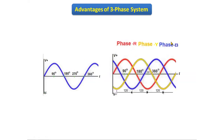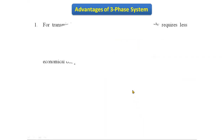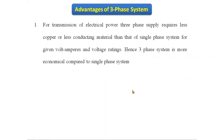R, Y, B are the three phases. From each phase to the next, there is a 120-degree phase shift. This is the waveform of the three-phase AC system. Now let's see the advantages of the three-phase system.